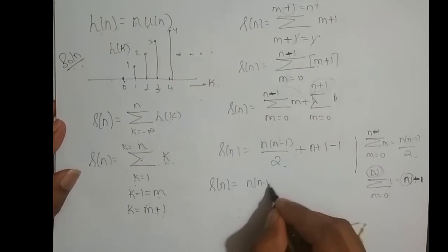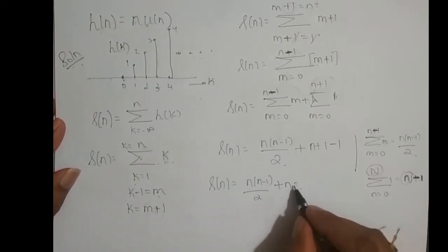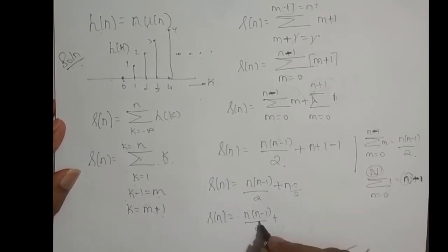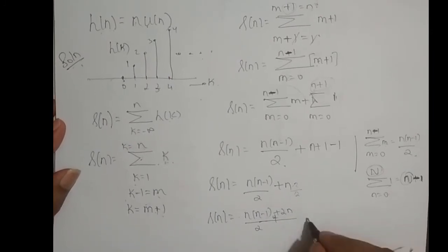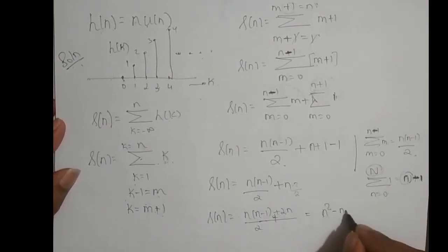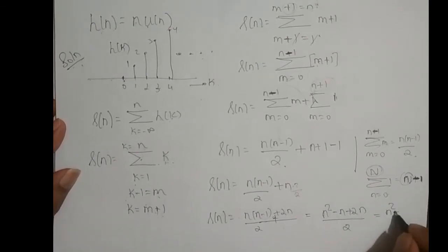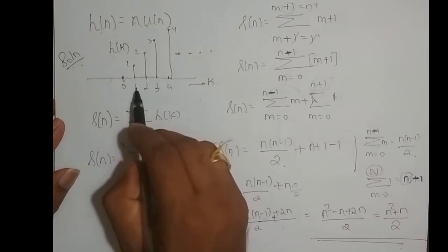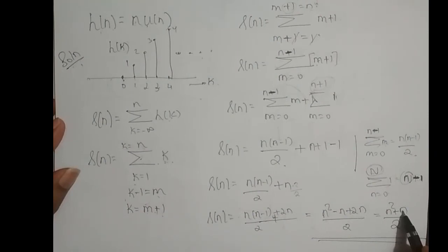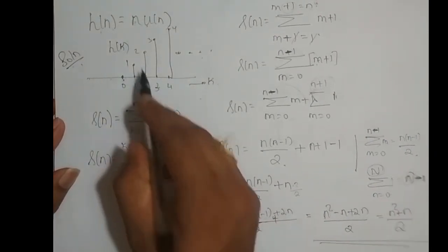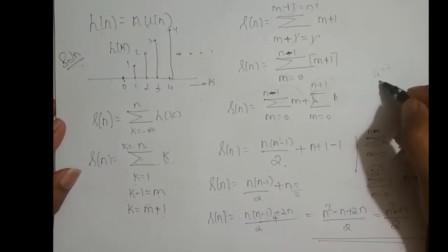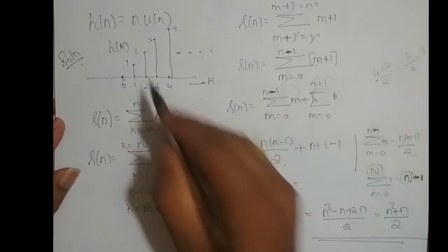So s of n equals n times n minus 1 divided by 2, plus n. Simplifying by multiplying numerator and denominator by 2: s of n equals n squared minus n plus 2n, all over 2, which gives n squared plus n divided by 2. We can cross-check: when n equal to 1, 1 squared plus 1 over 2 equals 1. When n equal to 2, 4 plus 2 over 2 equals 3, which matches 2 plus 1 equals 3. The formula checks out.